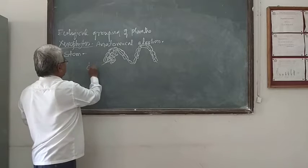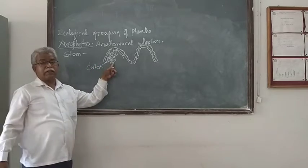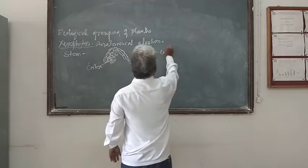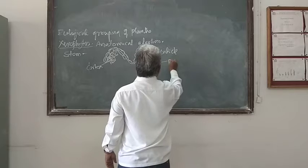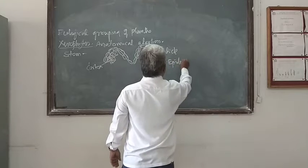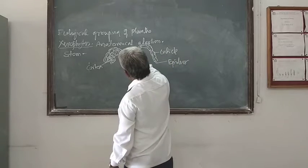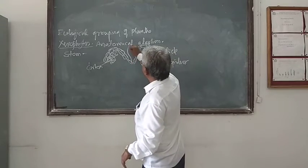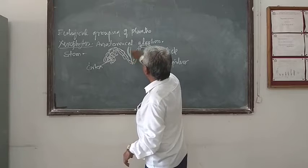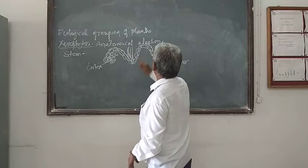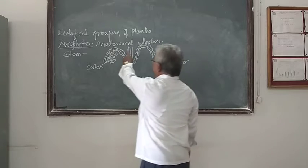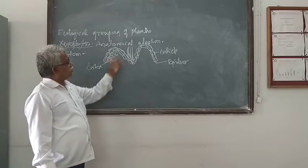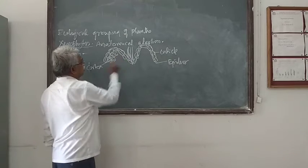You may call it the cortex — the hypodermal cell that is called the cortex. So this is the thick cuticle, and here is the epidermis. In the ridges and the furrows of the Casuarina stem, this shows the root hairs — sorry, here are the stomata present especially in between the ridges of the Casuarina stem. The transverse section of Casuarina shows this type of structure.